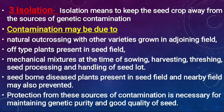Isolation means to keep the seed crop away from the source of genetic contamination. Contamination may be due to natural outcrossing with other varieties grown in adjoining fields, off-type plants present in the seed field, and mechanical mixture at the time of sowing, harvesting, threshing, seed processing, and handling of seed lot.